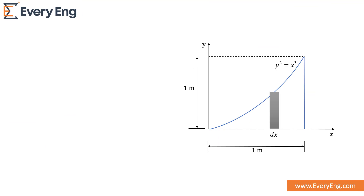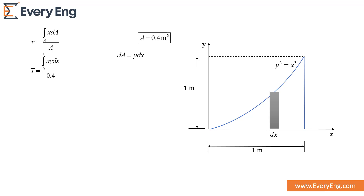Now we can calculate the centroid of this figure. First, we calculate the centroid from the y-axis using the standard centroid equation. The elemental area is y·dx and the total area is 0.4 m². The distance x is taken from the centroid of the rectangular section to the y-axis. We can also put the value of y = x^(3/2) using the equation of the figure.